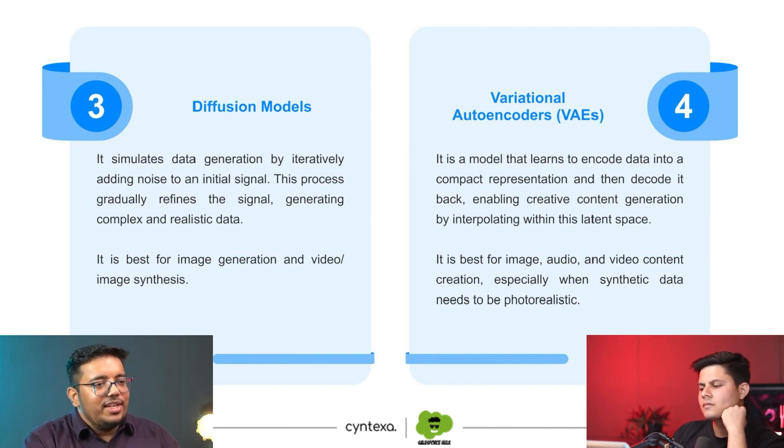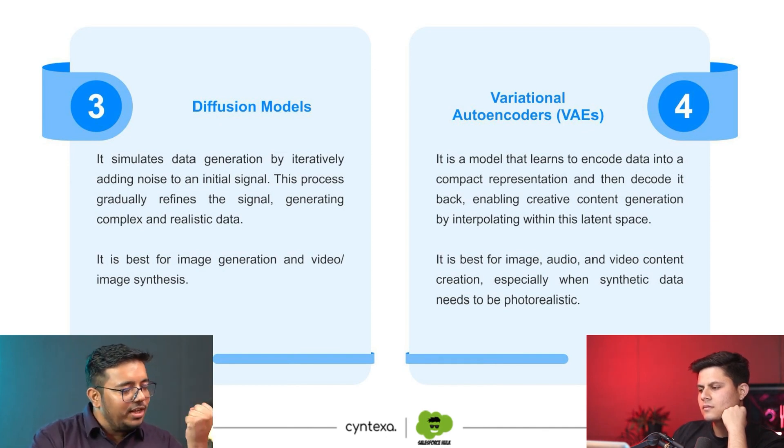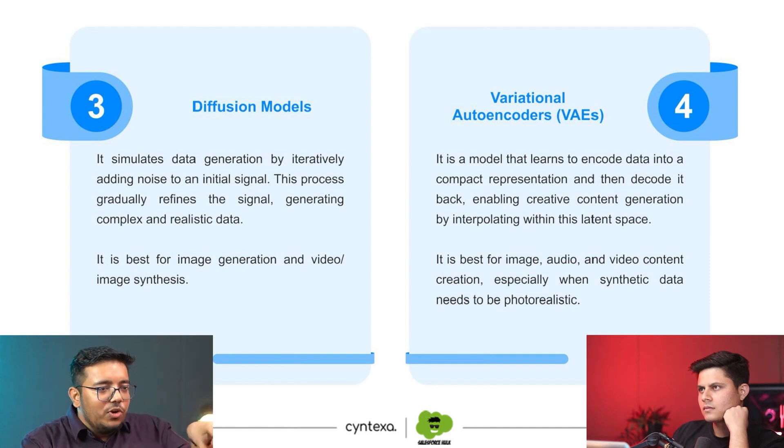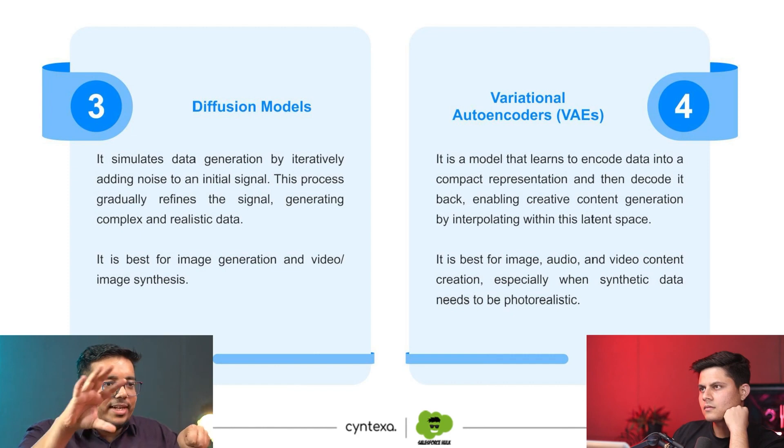Then we have Variational Autoencoders, which are a little more complex. What they do is take an input, identify the key features, and encode that data. Then there is a decoder which tries to decode that data. While doing so it creates new content — because when the data was encoded, some parts were lost since only the important aspects were captured, but when decoding, new content is added. This is used in image, audio, and video content creation, specifically when we want photorealistic output.